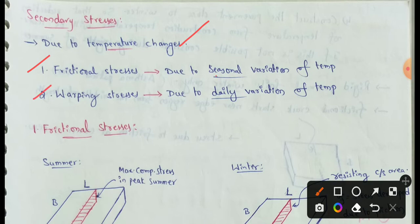In Frictional Stresses, we have Seasonal Variation of Temperature. At the same time, Warping Stresses involve the Daily Variation of Temperature. In daily variation of temperatures, these Warping Stresses act.